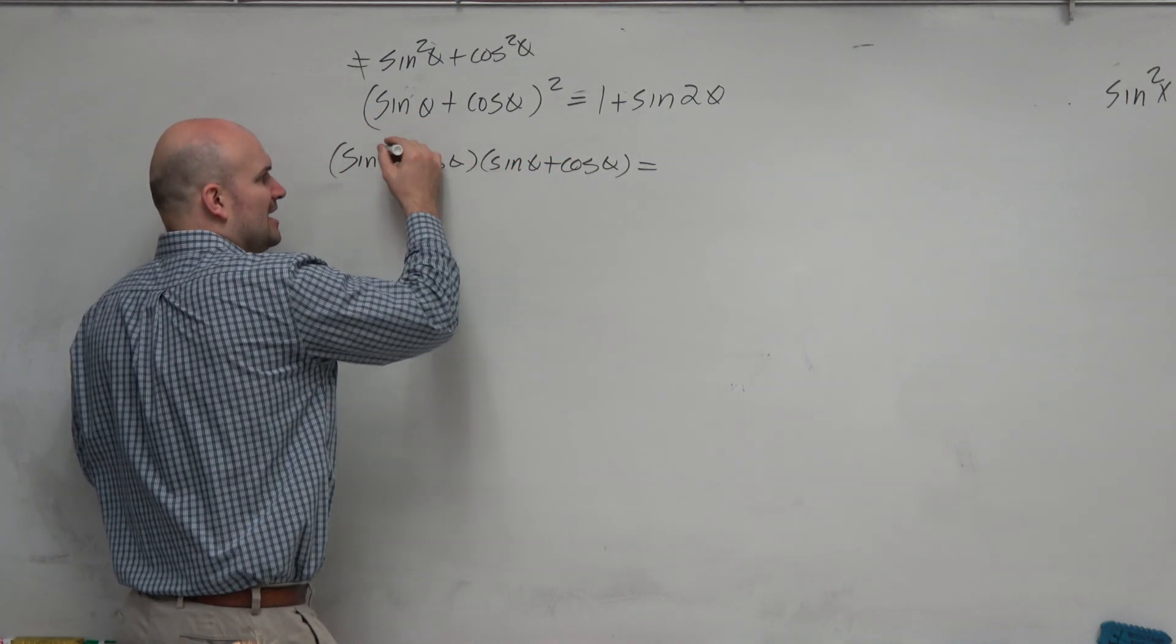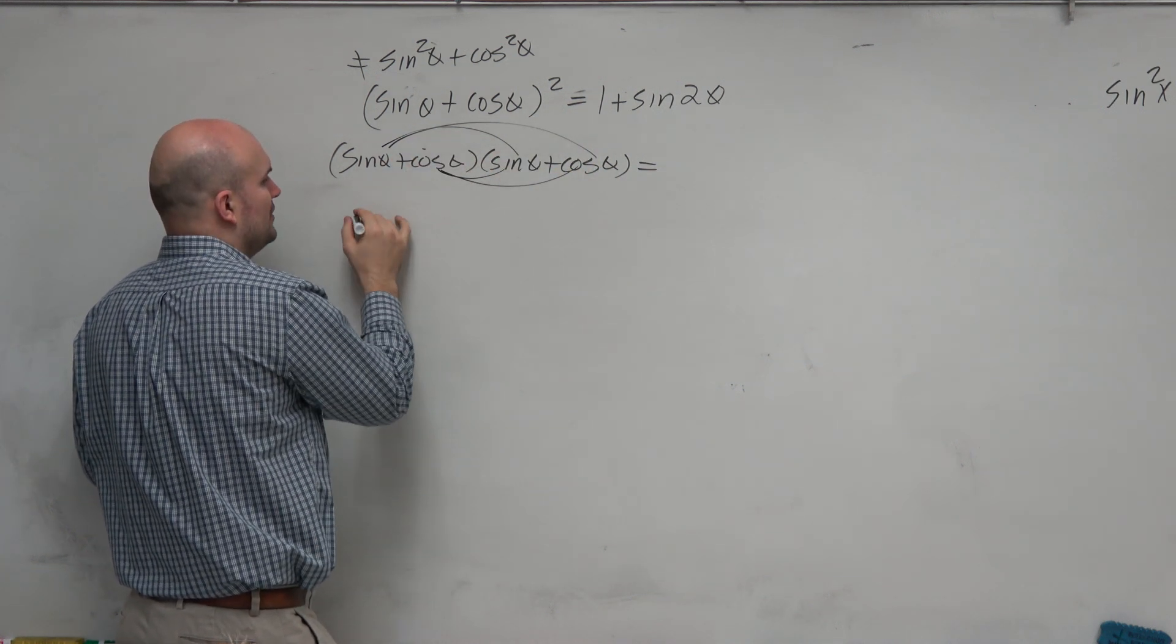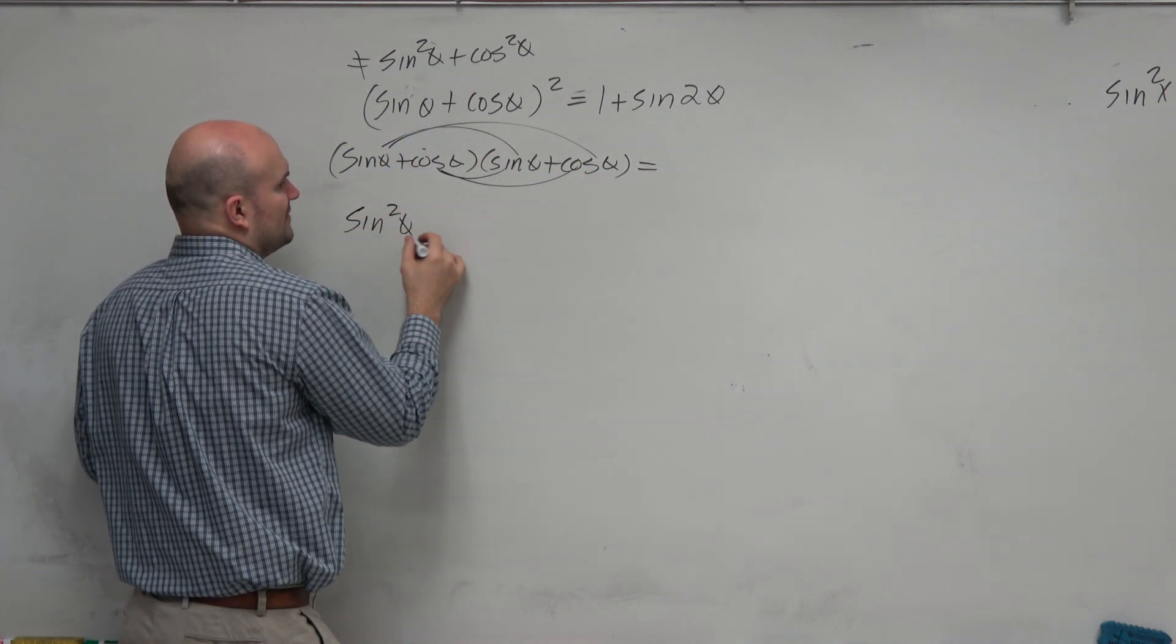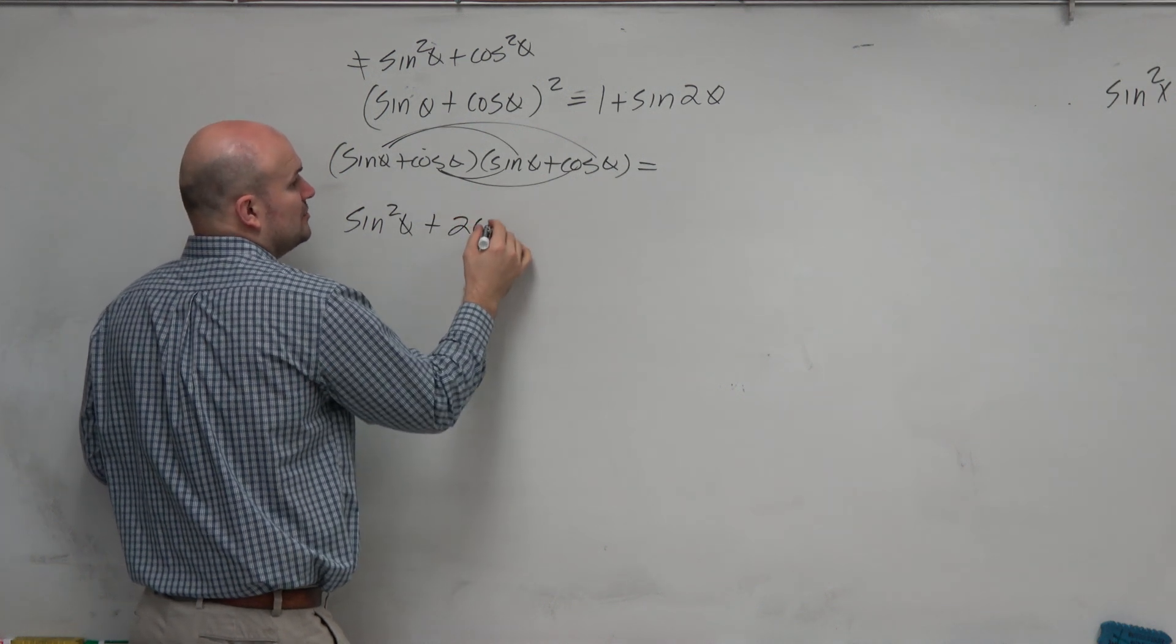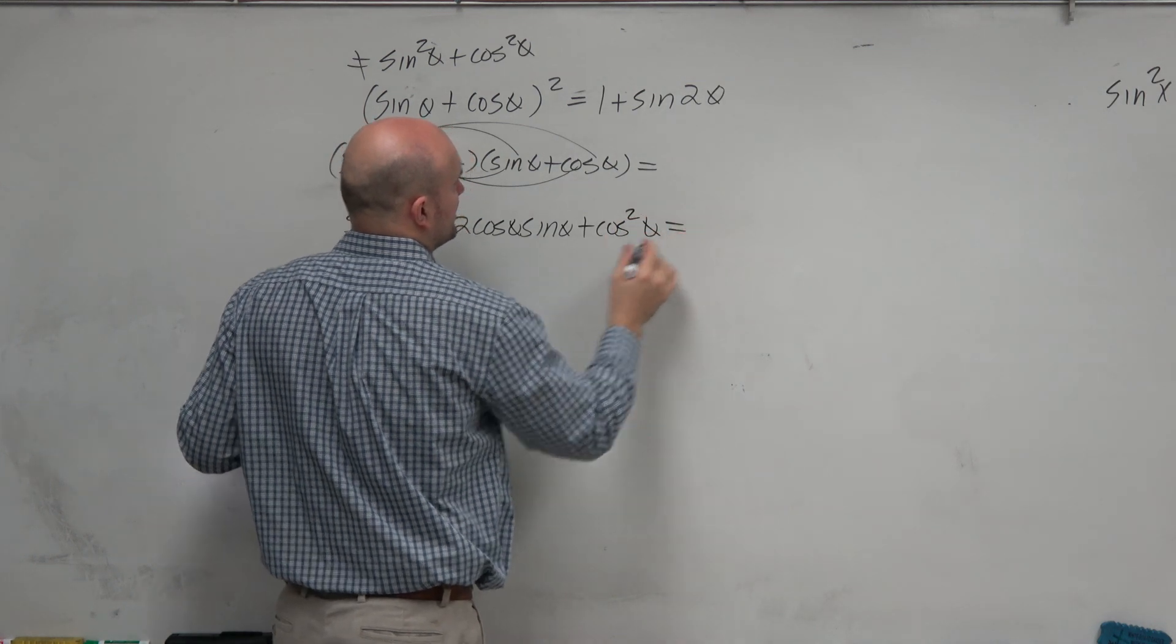Now we can apply FOIL here, which I'm not going to go through these steps. So once you apply FOIL, you'll get sine squared of theta plus 2 cosine of theta sine of theta plus cosine squared of theta.